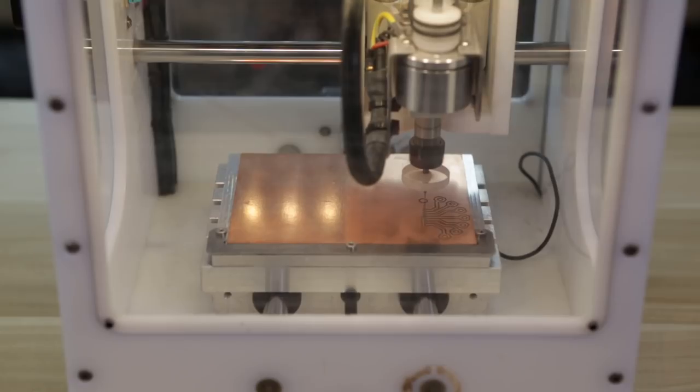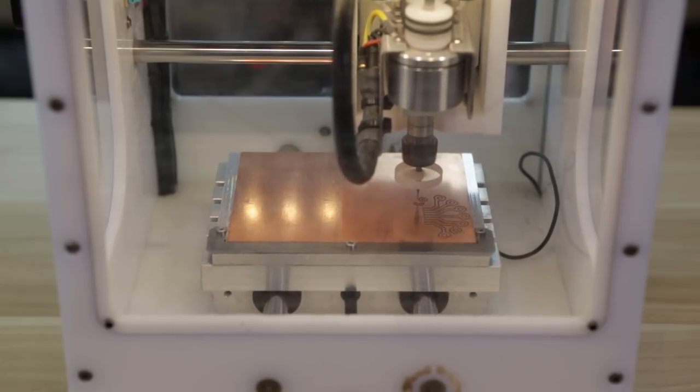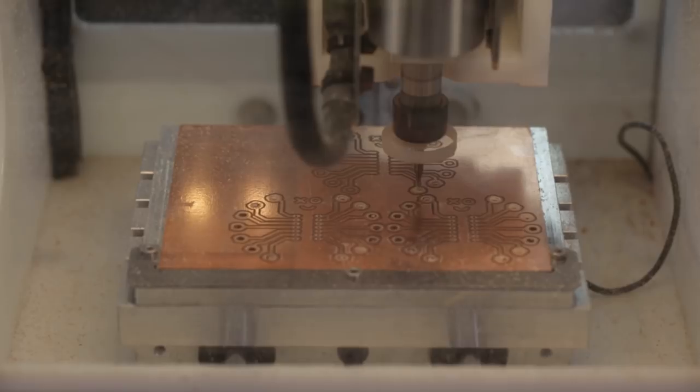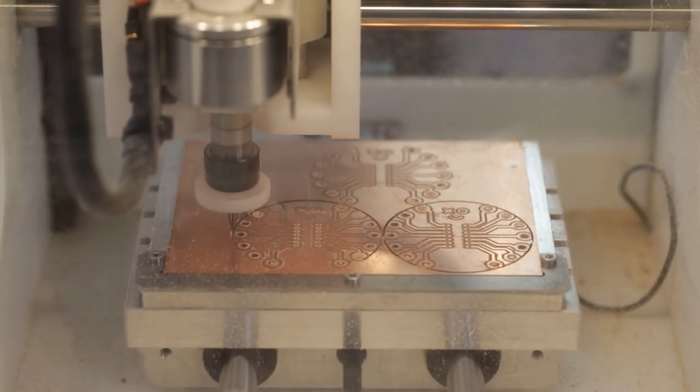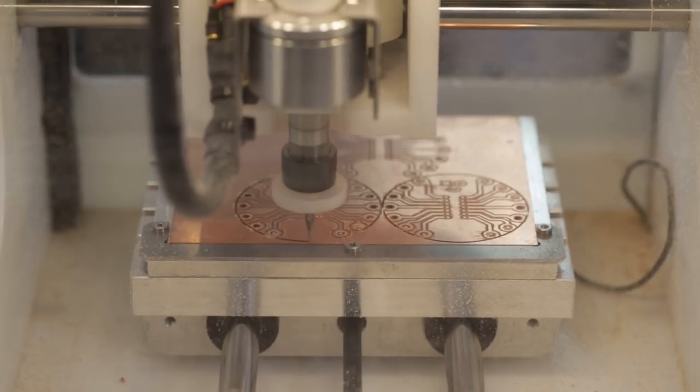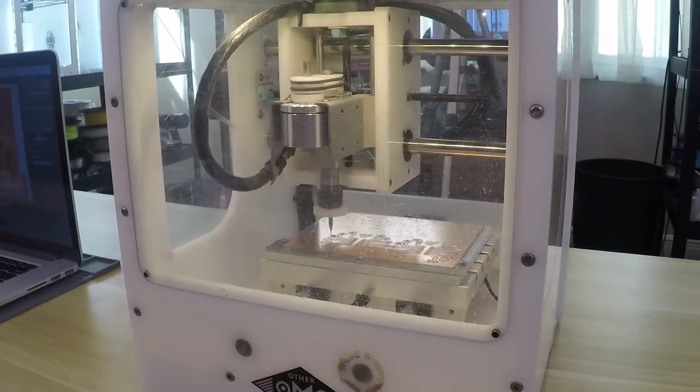Once we start it back up the machine will run through all of the traces first. Then it'll drill each hole. After that it'll take a few passes to cut the outlines. This process takes about 10 minutes with all the traces, holes and outline. Still it's a very quick process.